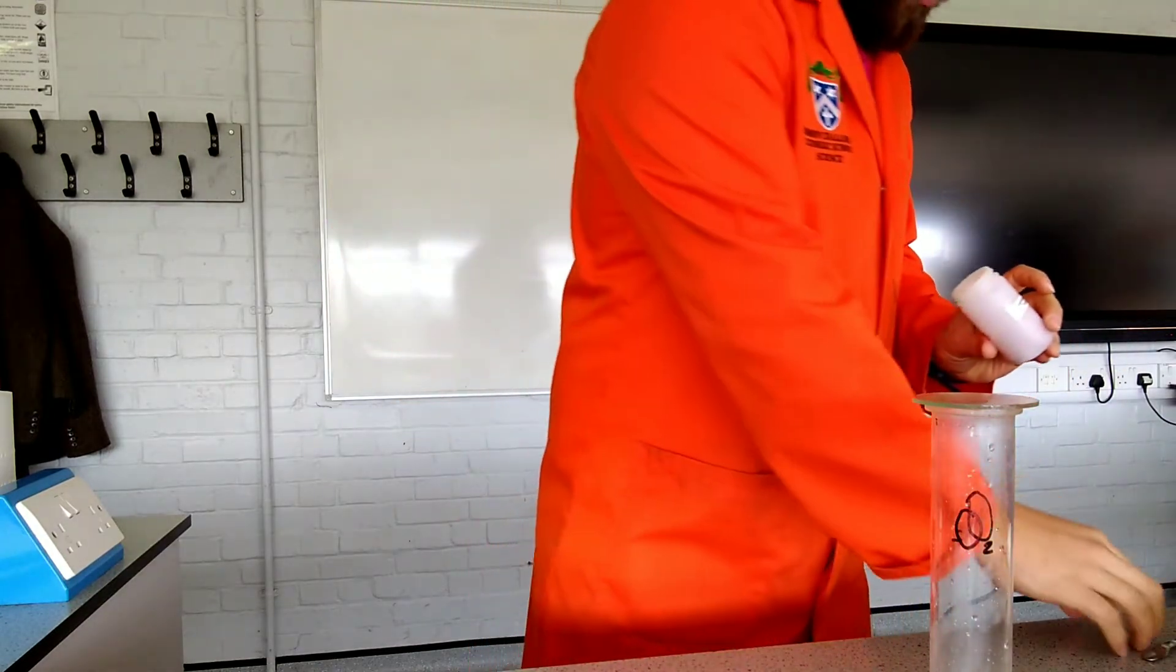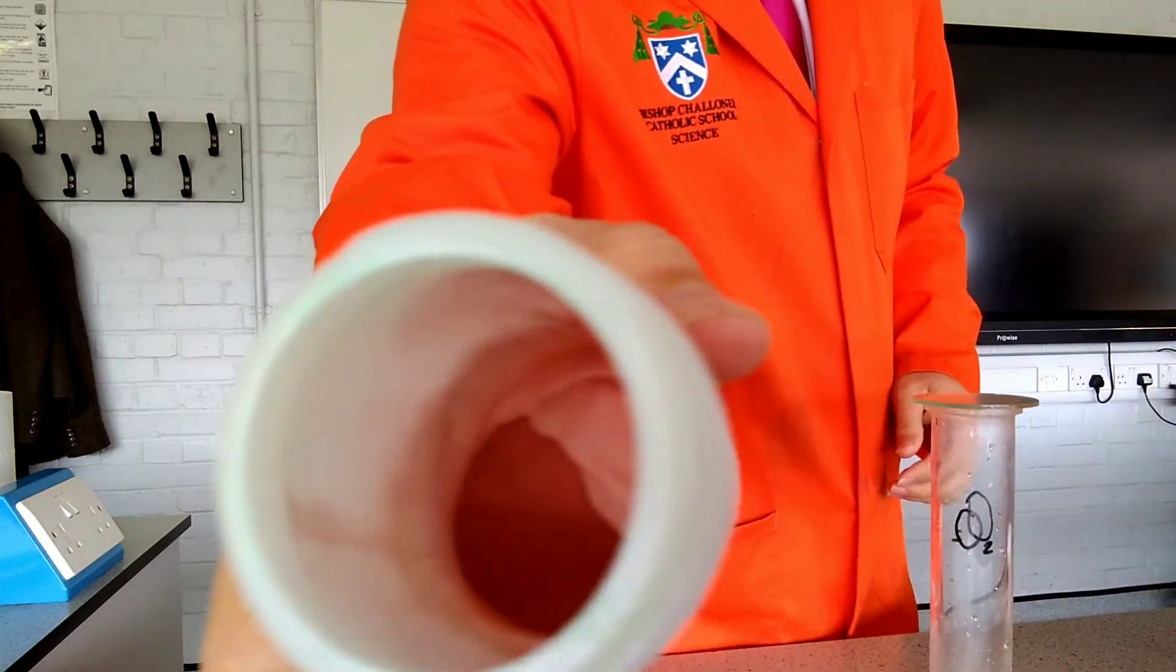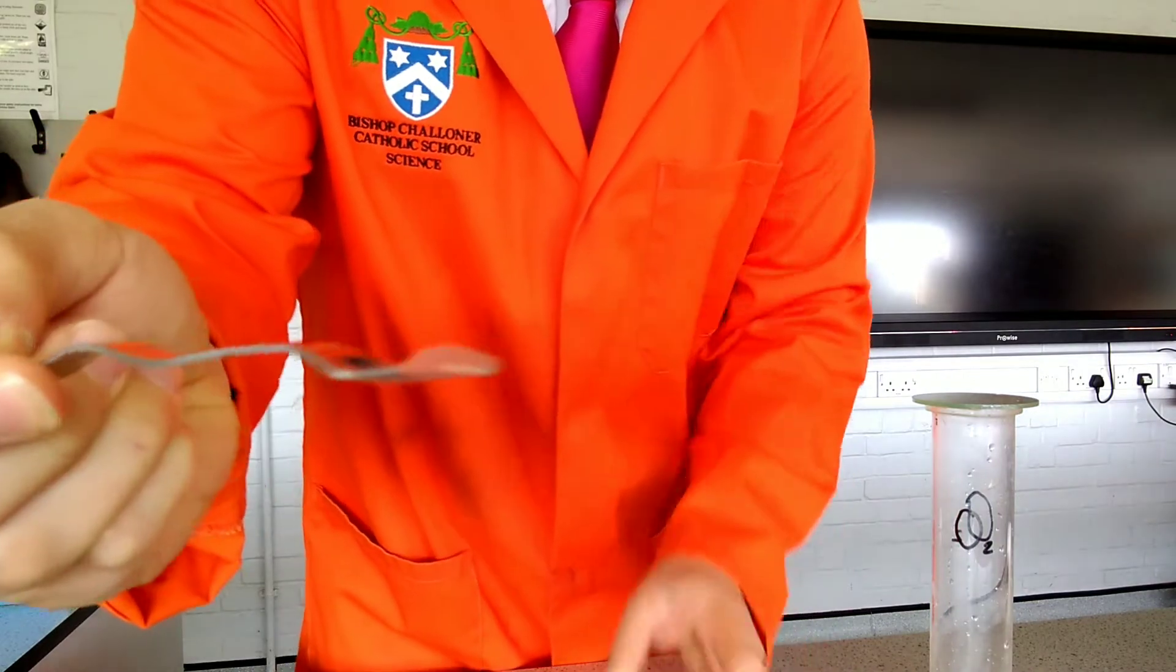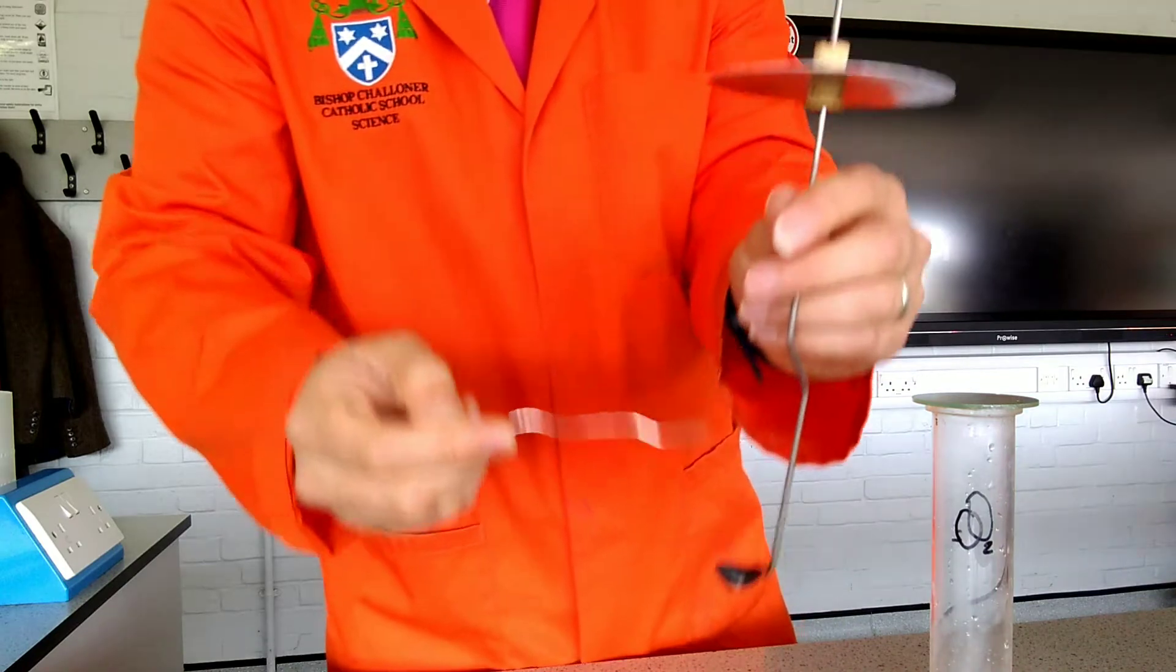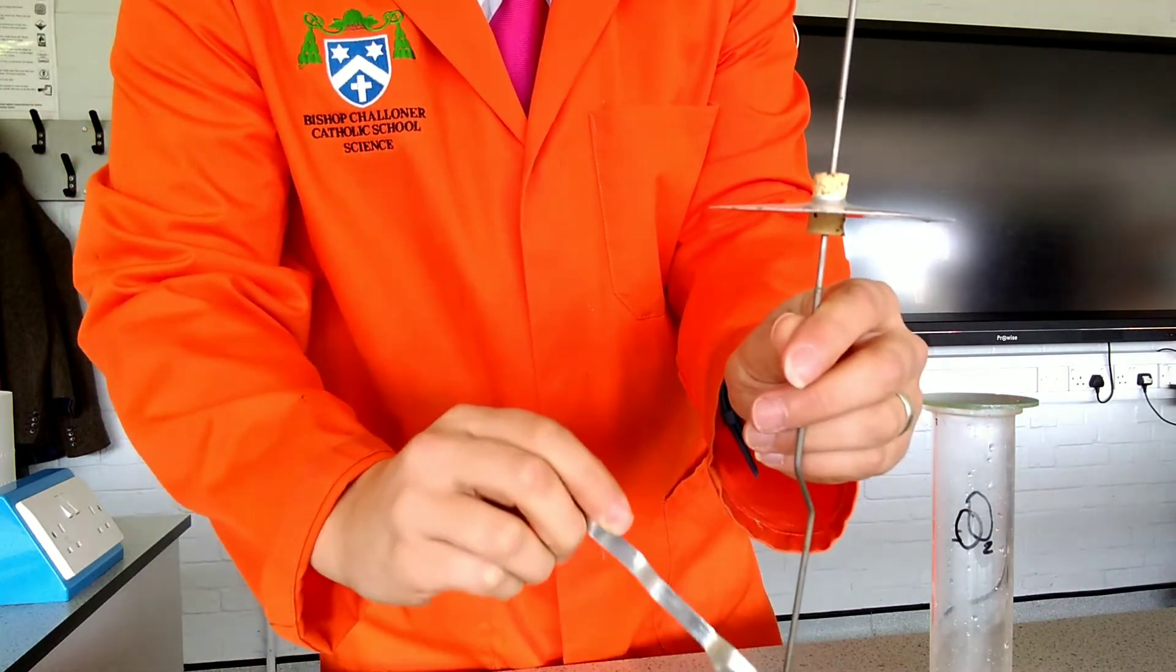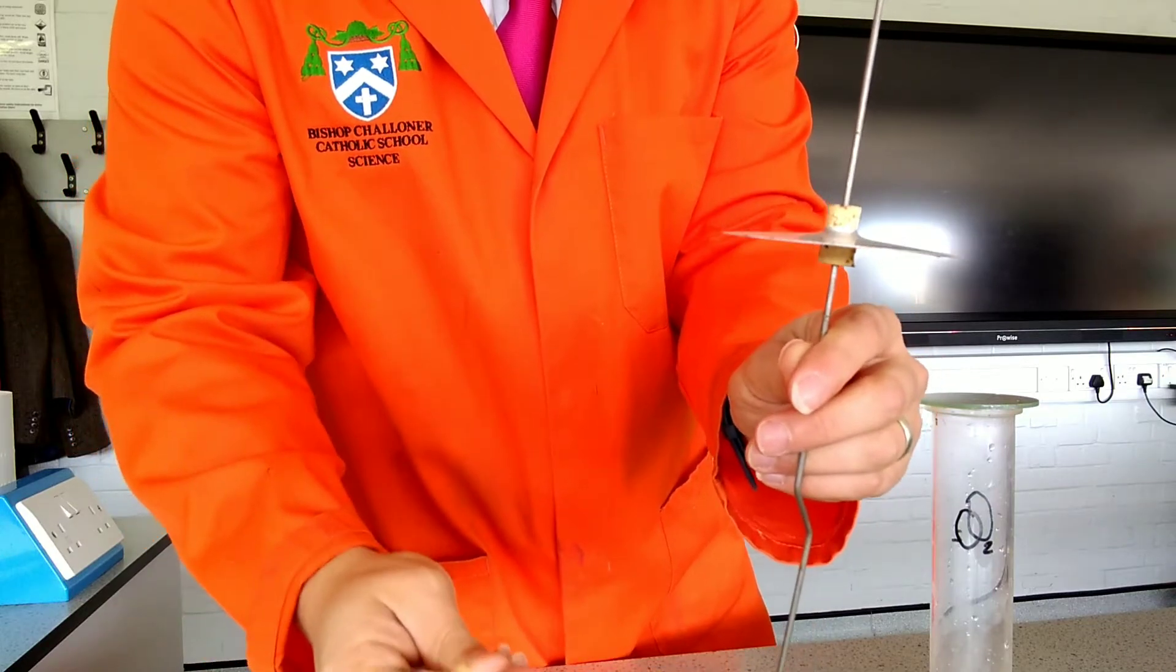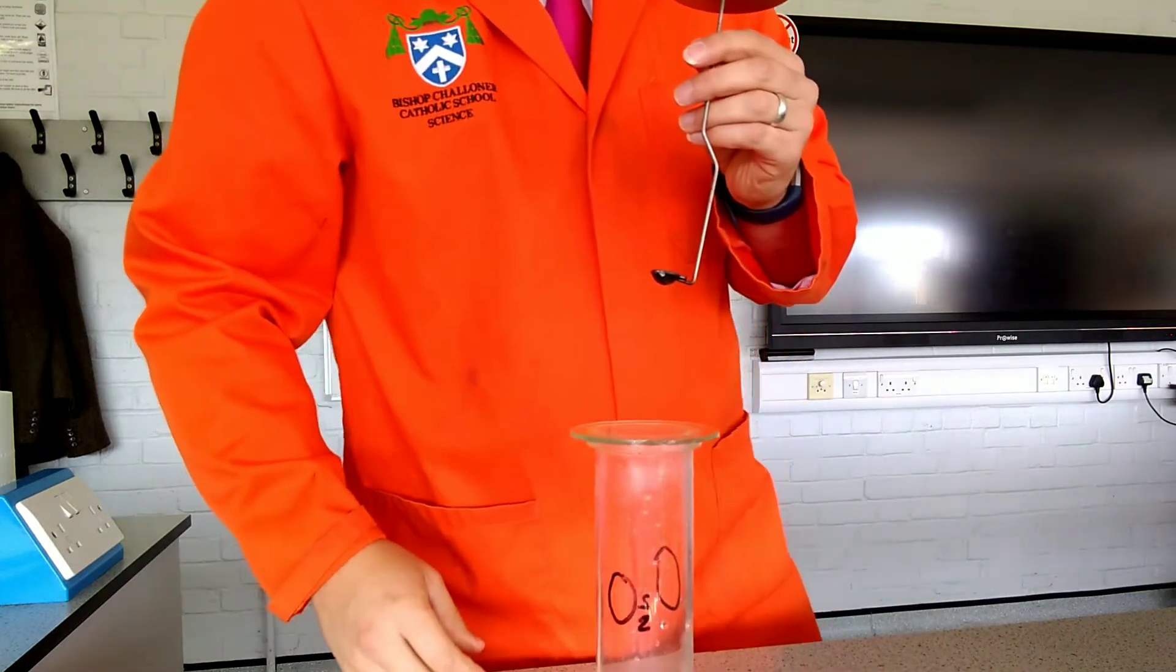So the first thing we're going to look at is some copper. Now copper is a sort of orangey color. I'll show you that on the spatula. It's a sort of browny orange. And we're going to use a kind of fancy spoon thing here called a deflagrating spoon. Now I've got a jar here of oxygen gas.